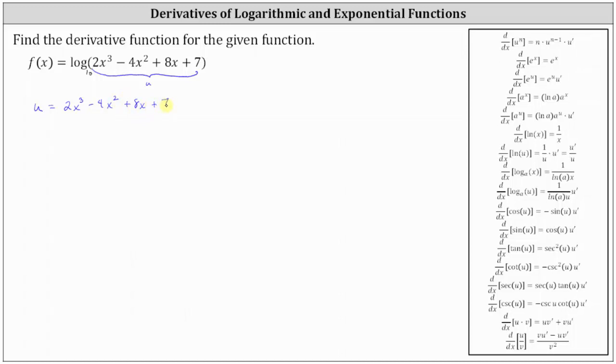We know to apply the chain rule, we need to find u prime, which is the derivative of two x cubed minus four x squared plus eight x plus seven with respect to x, which gives us six x squared minus eight x plus eight.